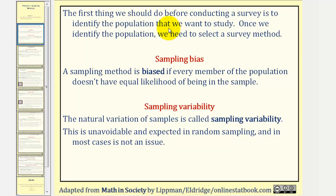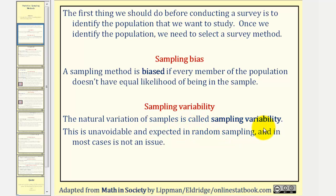The first thing we should do before conducting a survey is to identify the population that we want to study. Once we identify the population, we need to select a survey method. However, a sampling method is biased if every member of the population doesn't have equal likelihood of being in the sample. The natural variation of samples is called sampling variability. This is unavoidable and expected in random sampling, and in most cases is not an issue. So we can't avoid sampling variability, but we should try to avoid sampling bias.